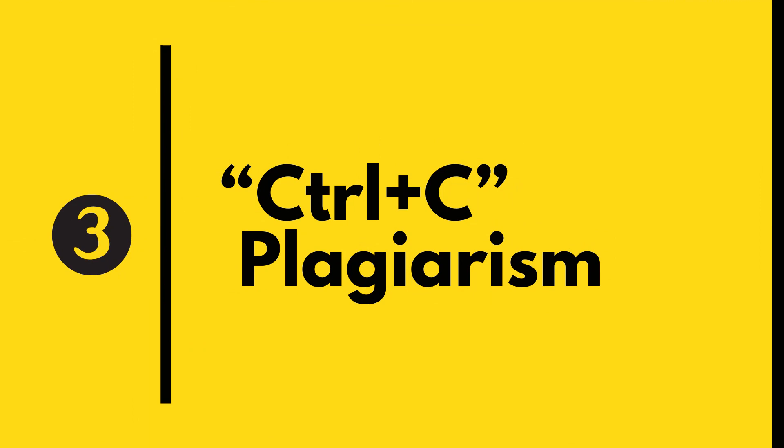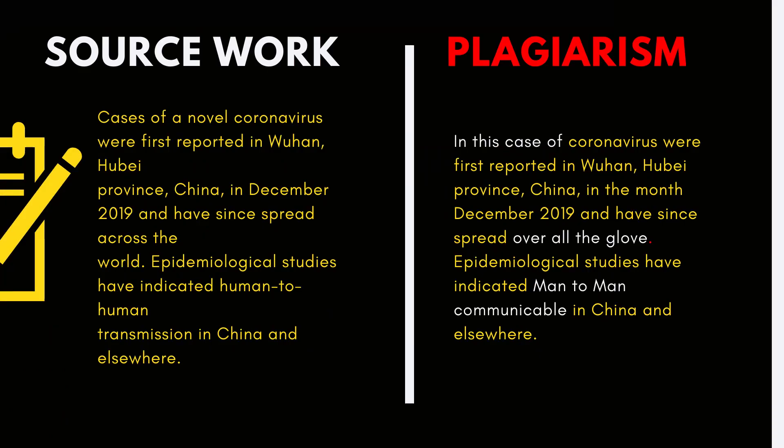The third type of plagiarism is called Ctrl+C plagiarism, simply called copying plagiarism. It happens when a significant portion of text is copied from any single source without any alteration. This copy plagiarism occurs when a person's work contains a large portion of text from a single source.